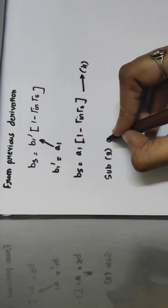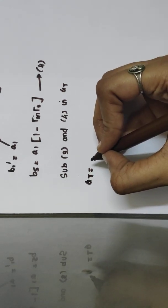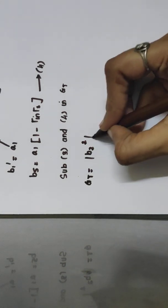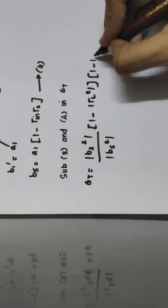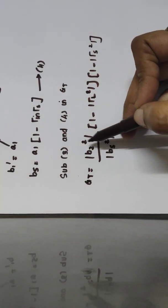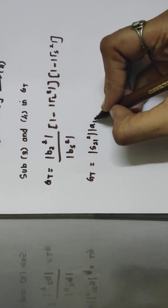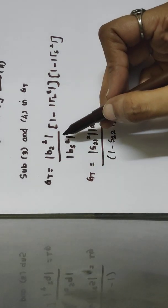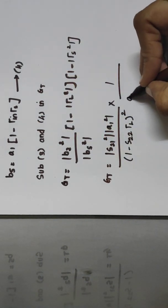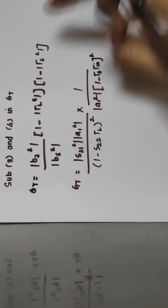Substituting equations 3 and 4 into the Gt formula: Gt = |B2|² / |Bs|² · (1 - |ΓL|²) · (1 - |ΓL|²). Substituting B2 from equation 3 and Bs from equation 4: Gt = |S21|²·|A1|² / |1 - S22·ΓL|² divided by |A1|²·|1 - ΓS|², multiplied by the remaining terms. The |A1|² terms cancel out.